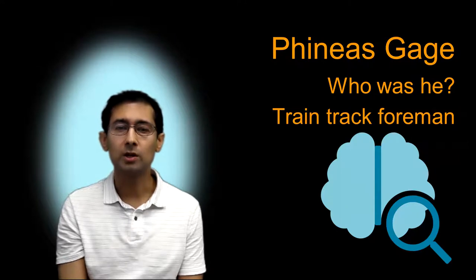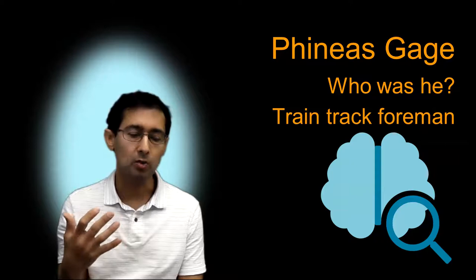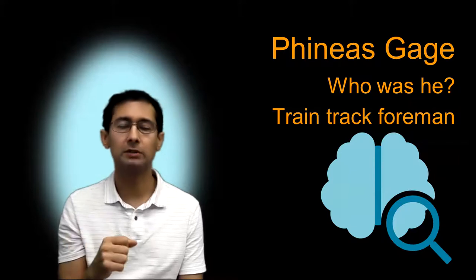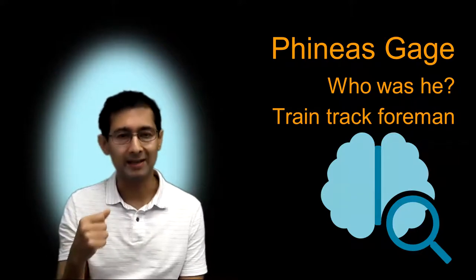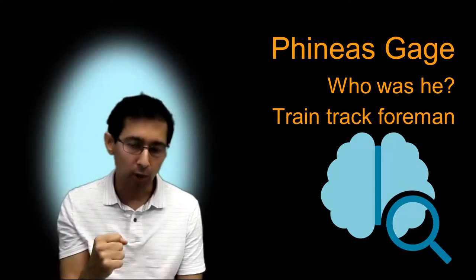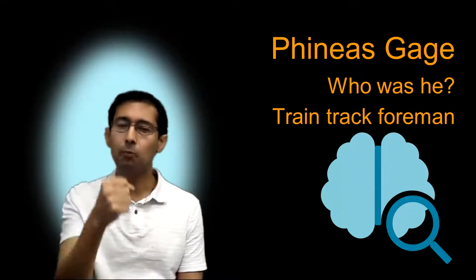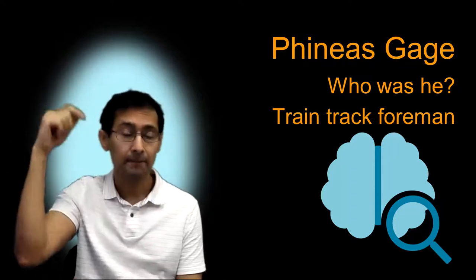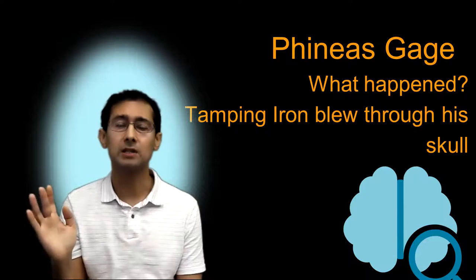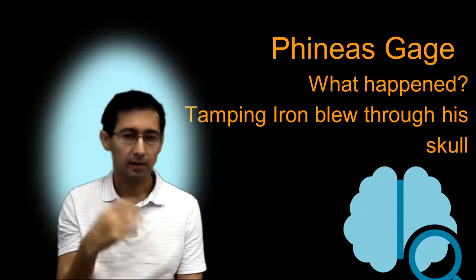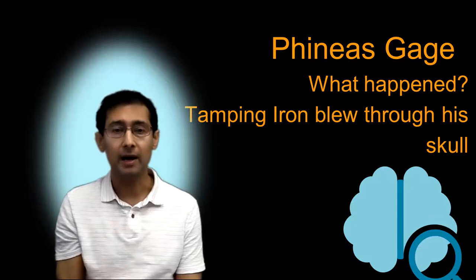One day he was working on a line, and back then when you constructed railroads, there was a lot of dynamite and hammering and tamping involved. He had this big tamping iron in his hand and was tamping down some material on the train track when he hit an explosive. That tamping iron fired upwards, and unfortunately his face was in the way. The tamping iron went through his face and up through the top of his head — it basically blew right out of his skull. In the video I referenced, they'll give you some gory details. He survived the accident.